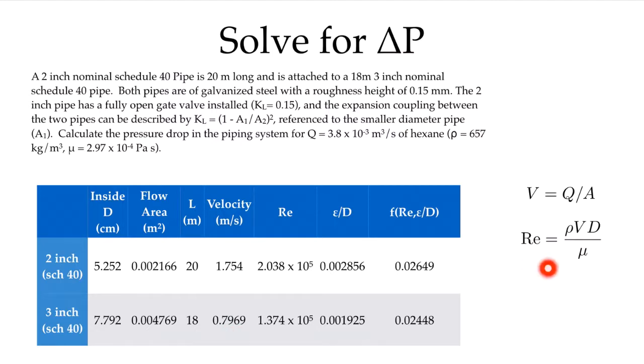From that velocity, I can calculate my Reynolds number. I know my density for hexane, I know my viscosity for hexane, and I know my inside diameter here. So I can calculate these two Reynolds numbers. In the 2 inch pipe, of course, it's higher, the fluid has to move faster, 2.038 times 10 to the 5. And in the 3 inch pipe, it's 1.374 times 10 to the 5.